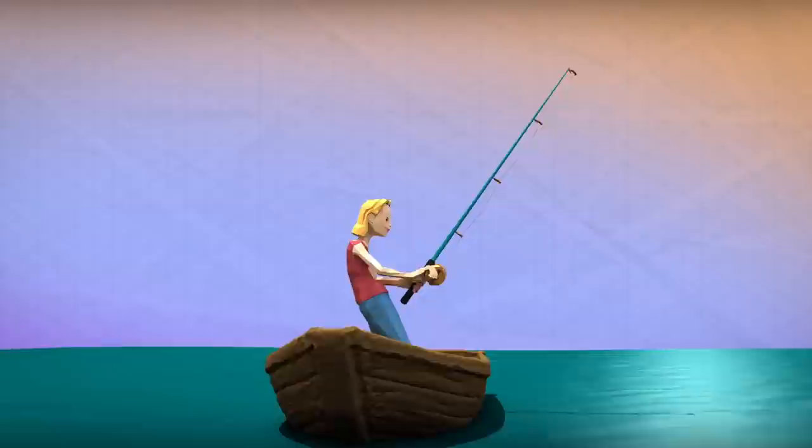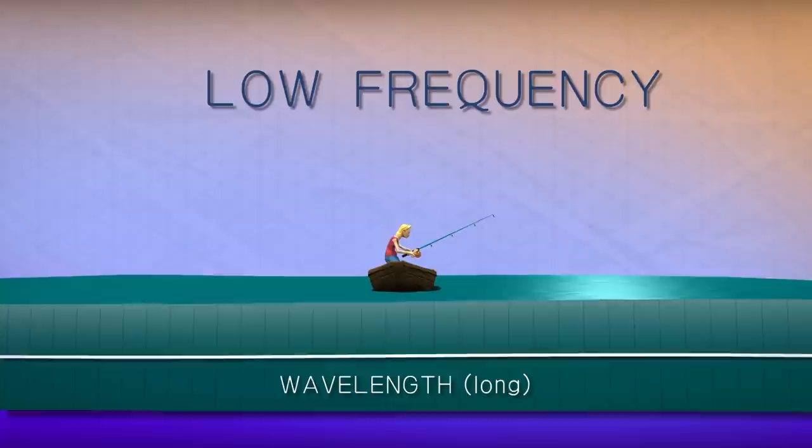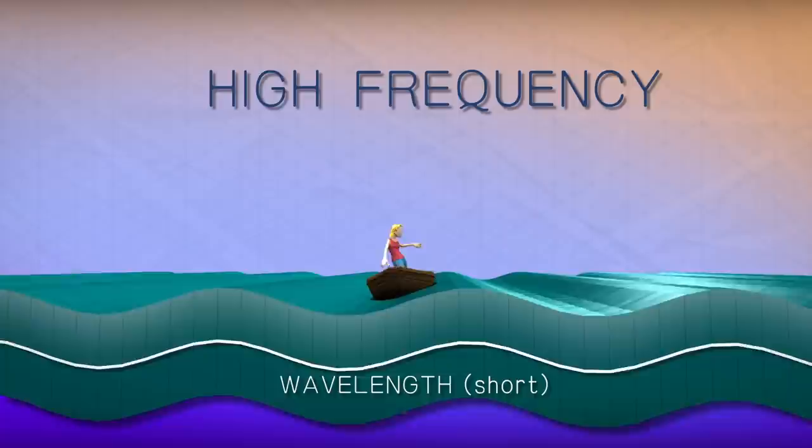Imagine being a boat in that ocean, bobbing up and down as the waves go by. If the waves that day have long wavelengths, they'll make you bob only so often, or at a low frequency. If the waves instead have short wavelengths, they'll be close together and you'll bob up and down much more often, at a high frequency.